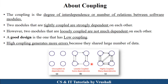What exactly is coupling? In a particular project, there are lots of modules. For example, in a college management system application, there are different modules like teacher module, student module, HOD module, and office module. How all these modules share information with each other is called coupling. As per the definition, coupling is the degree of interdependence or number of relations between software modules. When modules can't share information, functions, or methods with each other, this is called uncoupled — there are no dependencies.